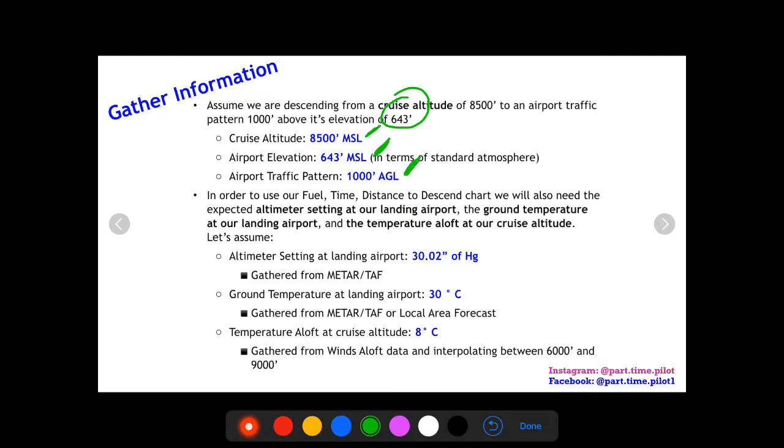The temperatures we will use in our fuel time and distance to descend chart, but you've got to remember the fuel time and distance to descend chart or climb chart, they need altitude and a temperature, and the altitudes have to be pressure altitudes. This airport elevation is not in terms of a pressure altitude, it's in terms of standard atmosphere. So we have to convert that into a pressure altitude, and that's why we need the altimeter setting at our landing airport.